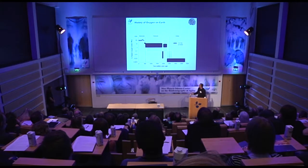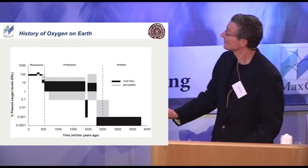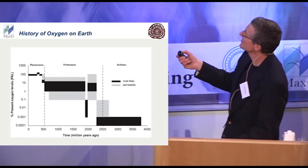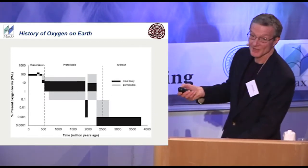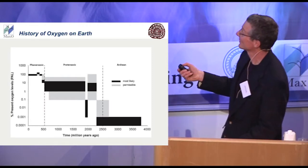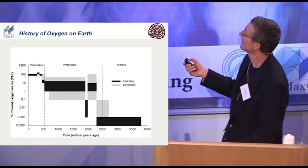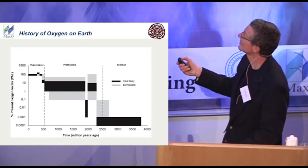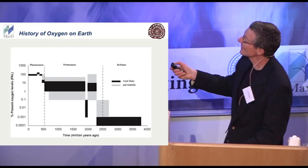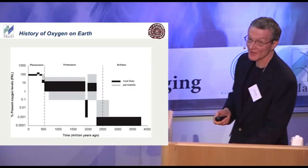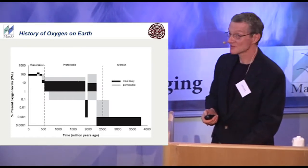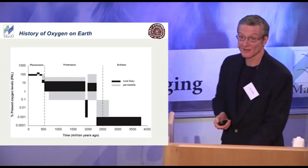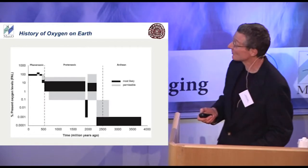I've spent a great deal of my adult life trying to generate this graph, which is a history of atmospheric oxygen through geologic time. It may or may not be correct, but I think it would be fair to call it the current understanding. Oxygen is very, very low in early Earth history. Oxygen has increased, and a very interesting period is around 500 to 600 million years ago, when animals first started to evolve.